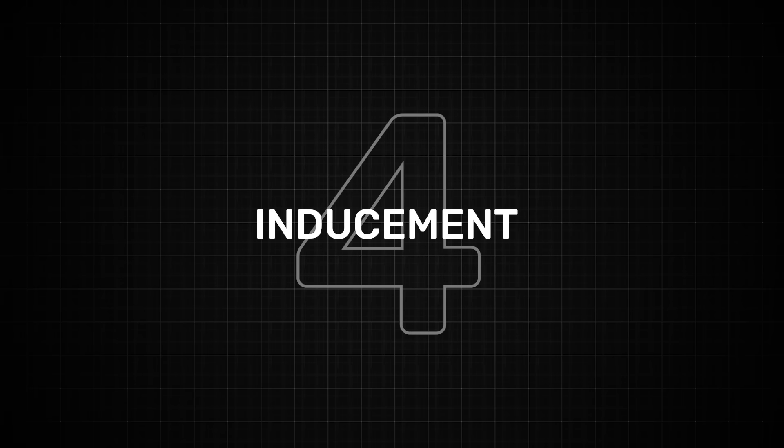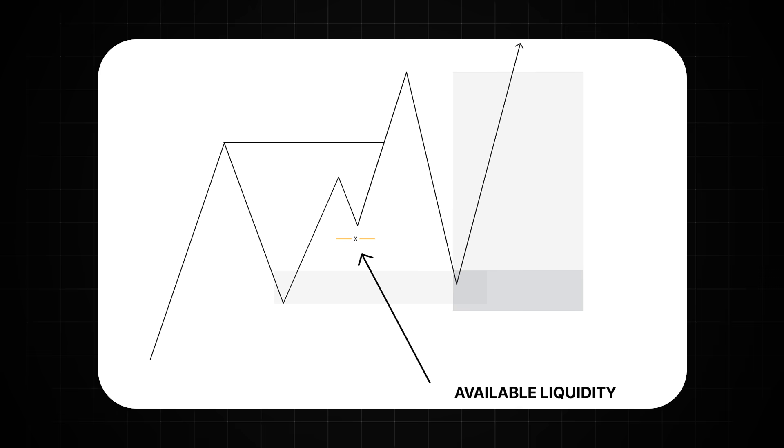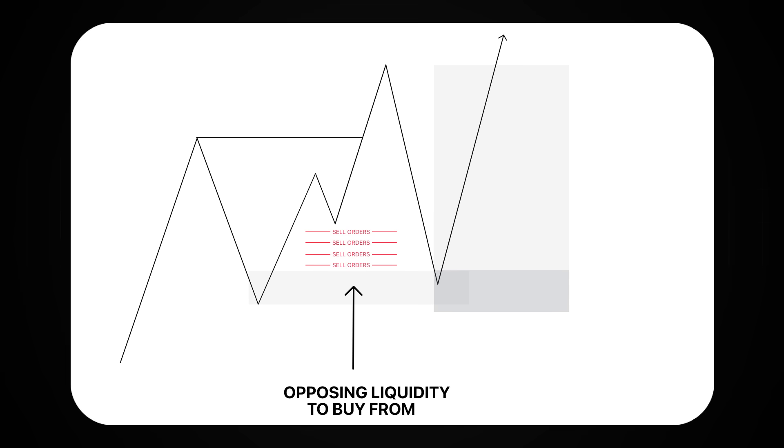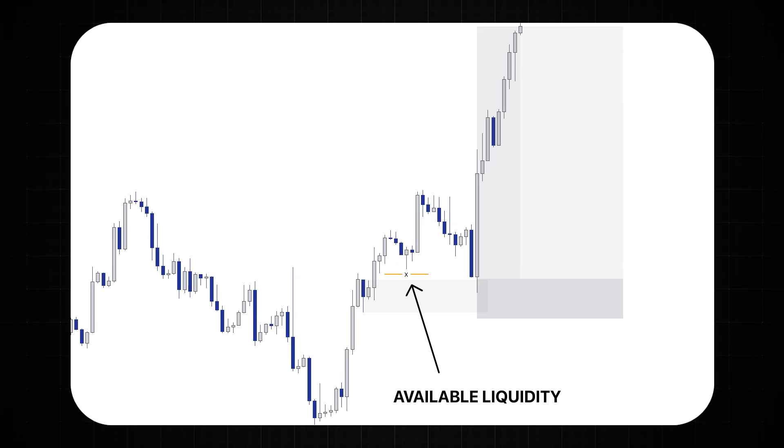Number four is inducement and this is another liquidity concept that can get very technical but essentially you just want to see is there available liquidity in front of the zone. Why? Well same reason as before. Institutions are going to need that opposing liquidity to enter the market with minimal slippage. Here you can see there is available liquidity behind this low for institutions to use to buy against.